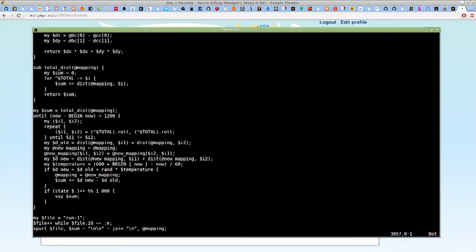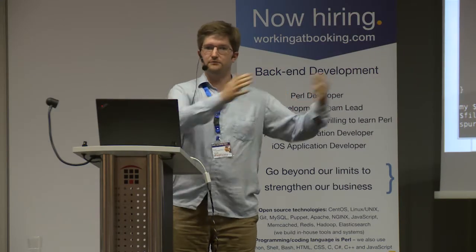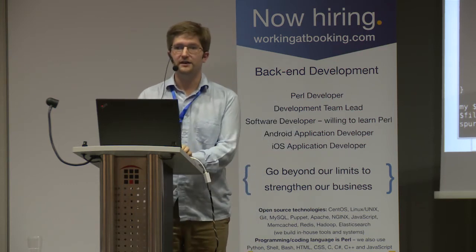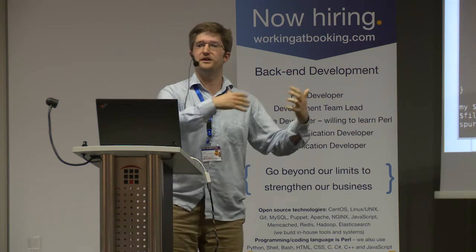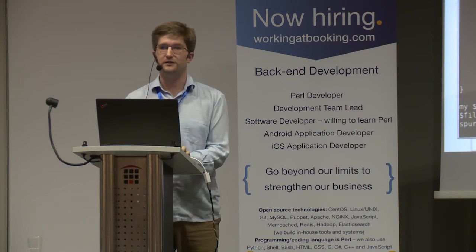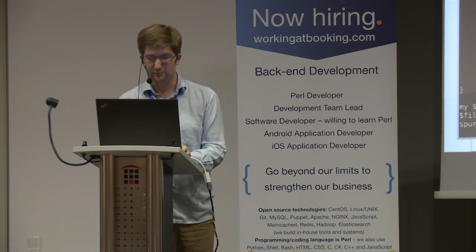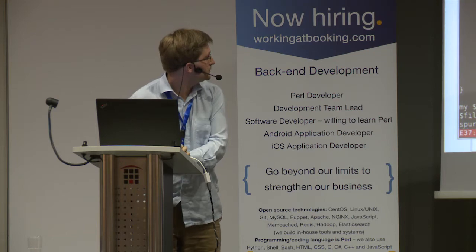Now I could bring in other things here, like genetic programming or things like that, but I just ran the script a bunch of times and that turned out to be good enough. There's also temperature in here, which means that by the beginning of the script it sort of randomly traverses this combining space, not caring if it gets better combinations or worse, just to not get stuck early in a local maximum or minimum. So that's the script.